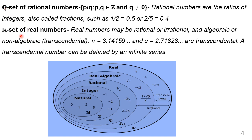The next set is R, the set of real numbers. It consists of both rational and irrational numbers — algebraic as well as non-algebraic numbers, which are popularly known as transcendental numbers. These include π (3.14159...) going up to infinity, and e (2.71828...) which can also go up to infinity. These are called non-algebraic numbers and can be defined by an infinite series.